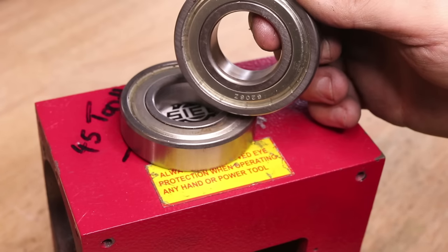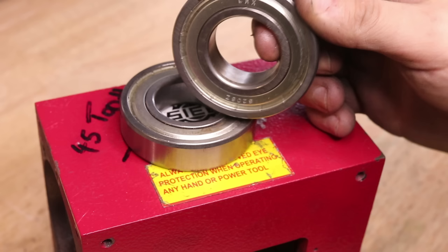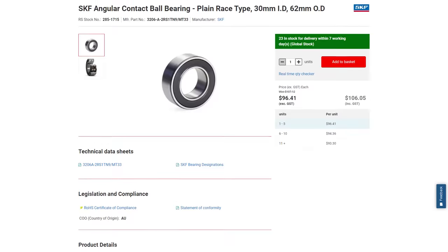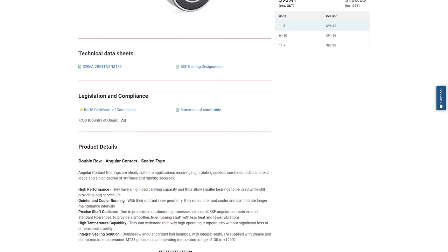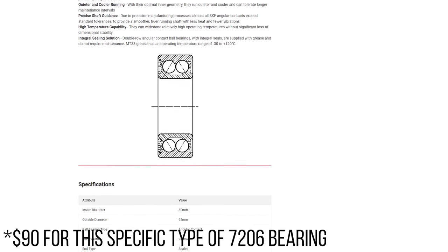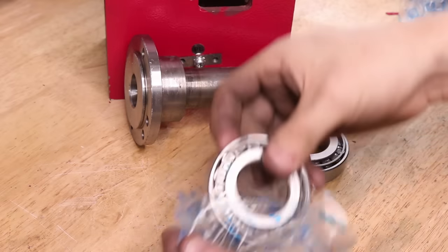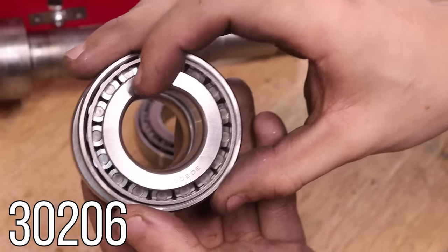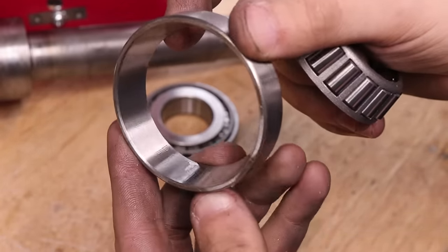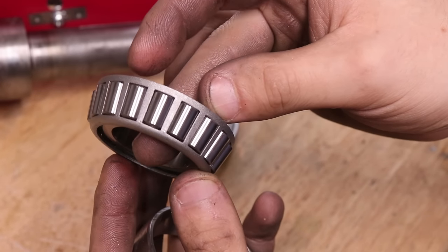As standard, these lathes come with a pair of 6206 ball bearings that really aren't designed to handle the loads generated by turning, hence the play and movement that we saw beforehand. Now optimally, we'd replace them with a set of 7206 angular contact bearings. They're sealed and they work really well at high RPM. However, the going cost for a set of angular contact bearings was about 90 dollars each plus shipping, so I did what most people do and opted for a set of tapered roller bearings. These are 3206 tapered roller bearings and they were about 20 dollars each.